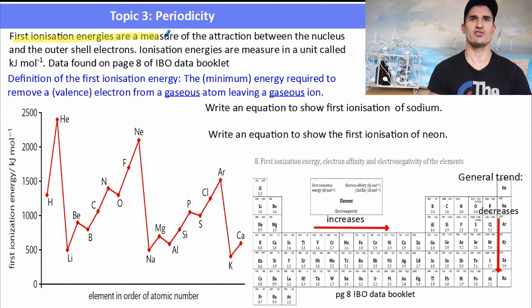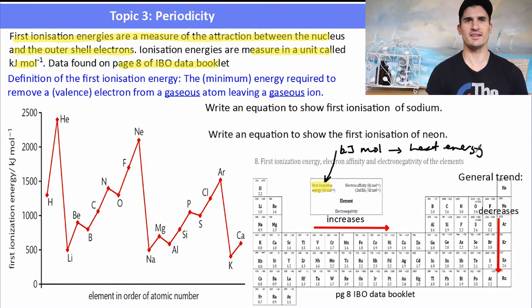First, ionization energy is a measure of an attraction between the nucleus and these outer electrons. Ionization energies are measured in a unit called kilojoules per mole. And the data for this can be found on page 8 of the data booklet. Now, when you have a look at page 8, there's two different things. We're looking at the top left-hand one for ionization energy, and it's measured in kilojoules per mole, which is essentially how much energy is required to remove that electron. Now, the definition of ionization energy, this is an important one. The minimum energy required to remove a valence electron from a gaseous atom to form a gaseous ion. You must use the words gaseous in this definition. Everything here will occur in the gas state.